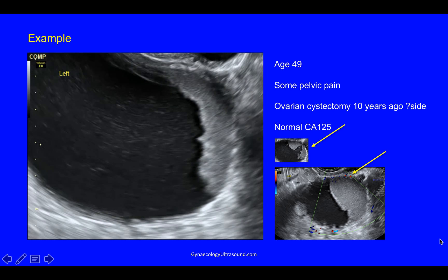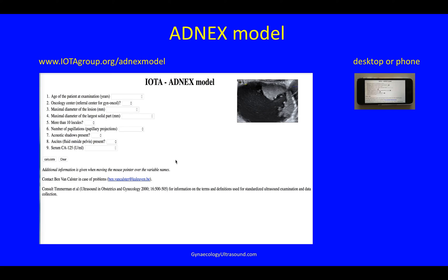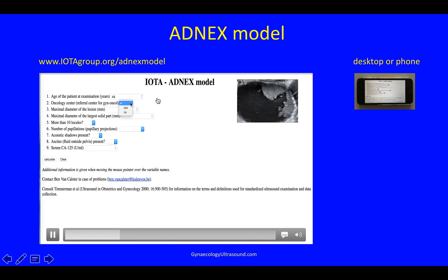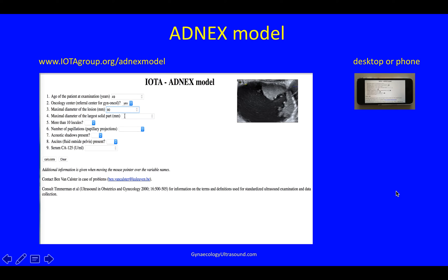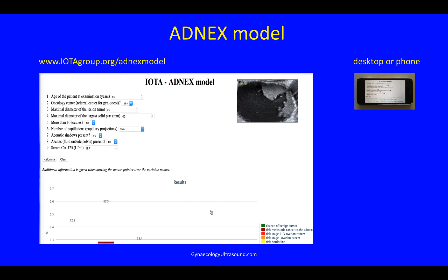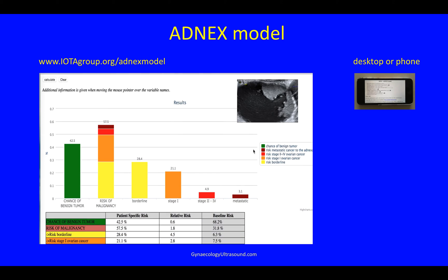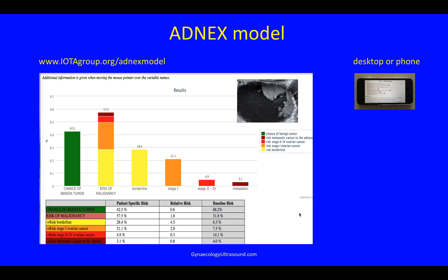How to use the ADNEX model. You can download this model from the IOTA group website — put it on your desktop or a phone or both — and then enter the details. She was 49, it was an oncology centre, the lesion was 90 millimetres, 40 millimetres was the largest solid component, there was one locule, two papillary projections, no shadowing, no ascites, and a CA125 level of 11.7. Then hit calculate, agree with the disclaimer, and this image shows up.